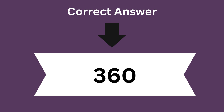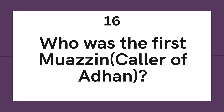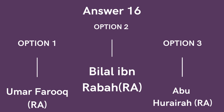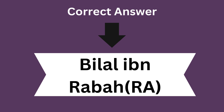Question 16: Who was the first Muazzin, or Caller of Adhan? Option 1: Umar Faruk radiyallahu. Option 2: Bilal ibn Rabba radiyallahu. Option 3: Abu Huraira radiyallahu. And the correct answer is Bilal ibn Rabba radiyallahu.